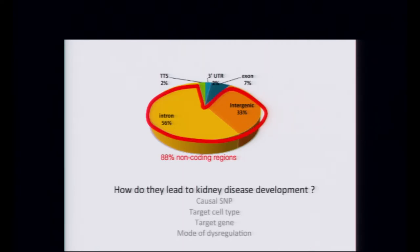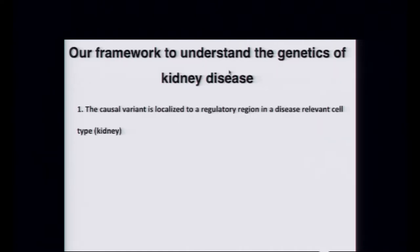We have the questions that have been discussed before: how do these SNPs actually lead to kidney disease development? We want to know which one is the causal SNP, which is the target cell type, and — because I'm mostly a cell biologist — what are the target genes. And knowing the mode of regulation would not be bad either. This is the framework: the causal variant is somehow localized to the regulatory region in a disease-relevant cell type. There are papers from John Stamm and Brad Rustin also looking at kidney-associated traits, and we believe these cell types are somewhere localized in the kidney — it's not really an immune phenotype.